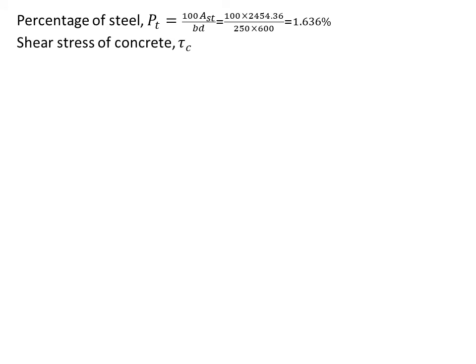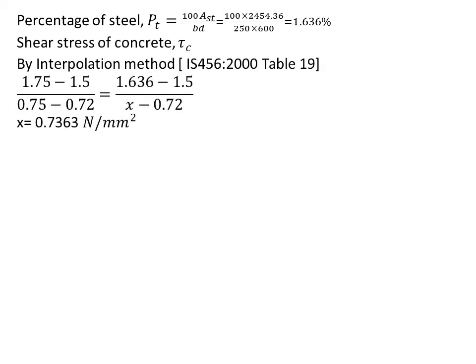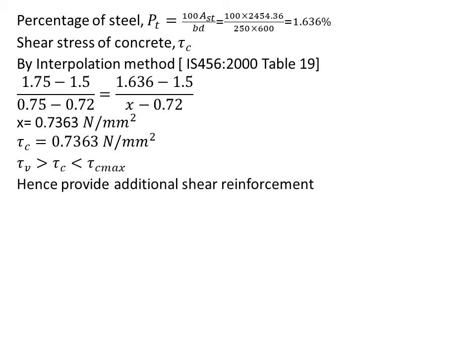We find the maximum shear stress from the table. We'll use interpolation, the values from the table. It does not satisfy the condition because normally shear stress is greater than the shear stress of concrete. Hence we have to provide additional shear reinforcement. When we provide additional shear reinforcement, we have to find the shear force for that reinforcement also.